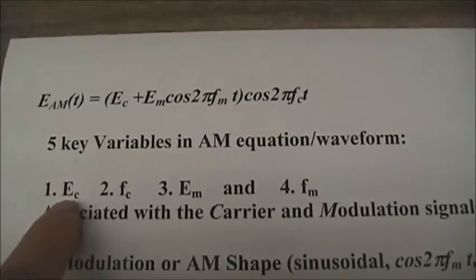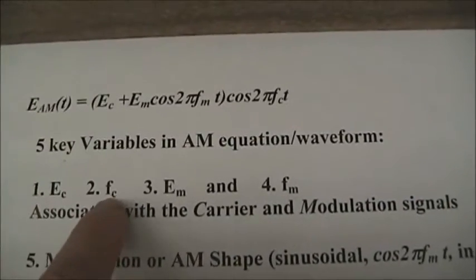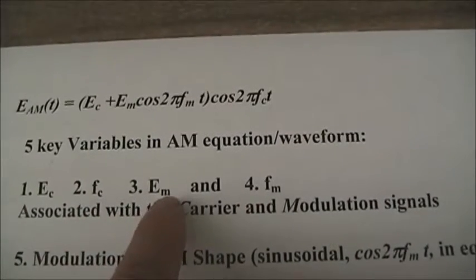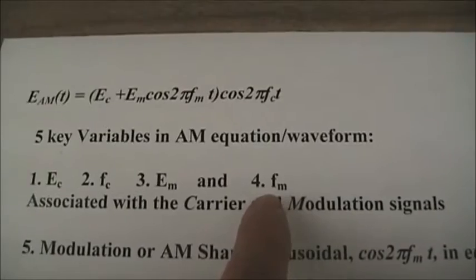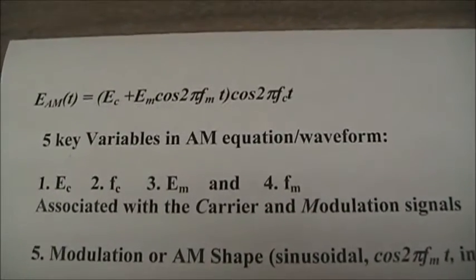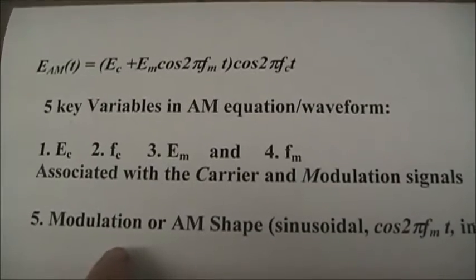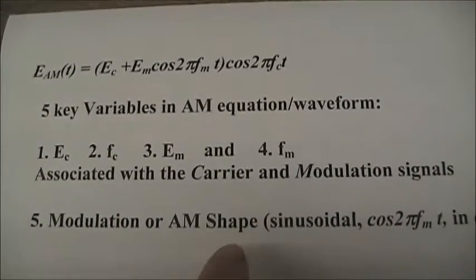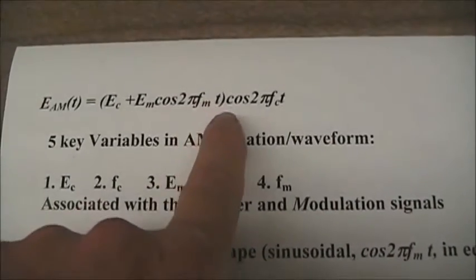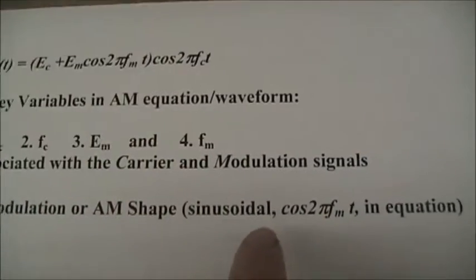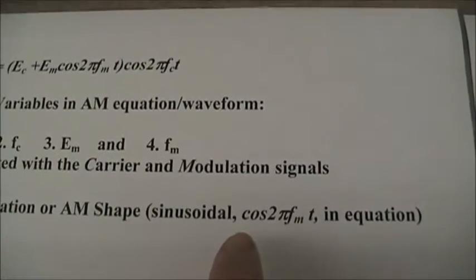We call it AM because the amplitude is being modulated. Now there are five key variables in that equation: the carrier voltage, the carrier frequency, the modulation voltage, and the modulation frequency. And we want to look at those in the time and frequency domains. There's a fifth variable associated with the modulation or AM shape, which in this case was sinusoidal, represented by cosine 2 pi fm of T.